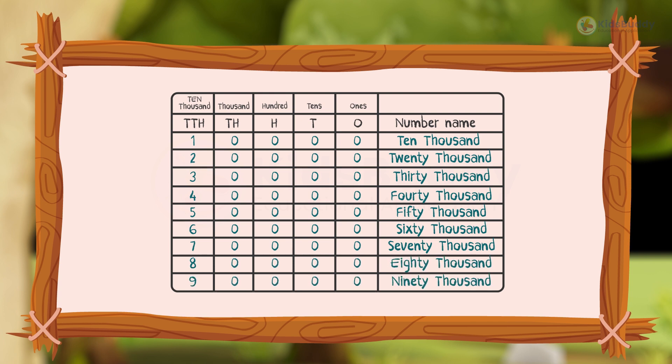This is how the 5-digit numbers are placed in the 10,000's, thousands, hundreds, tens, and ones columns.